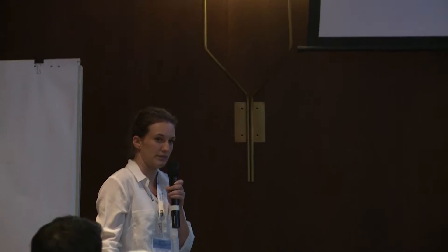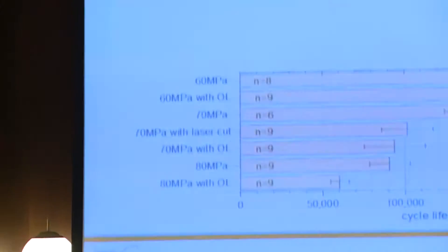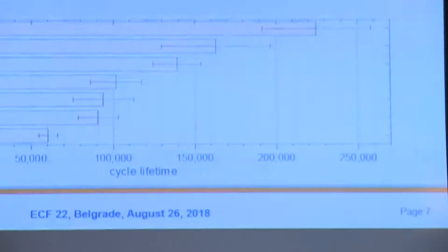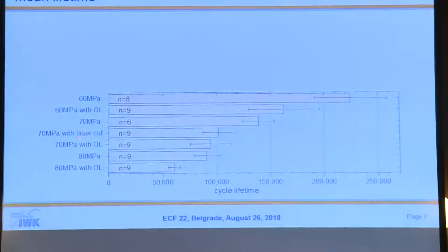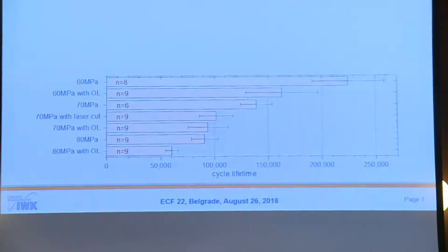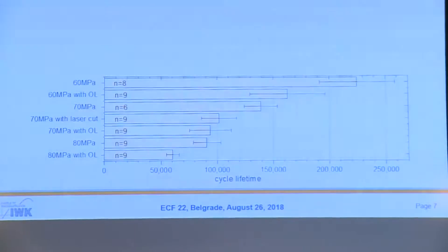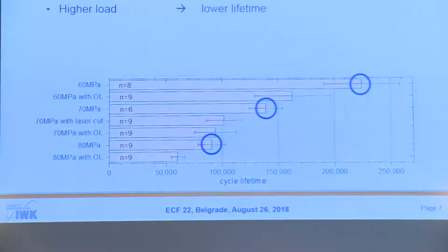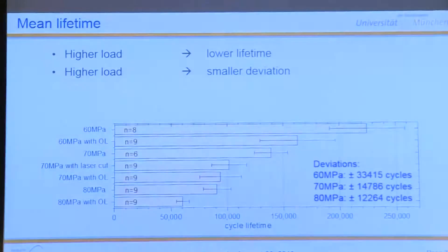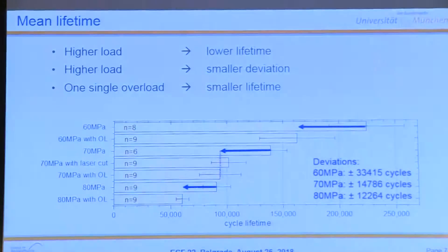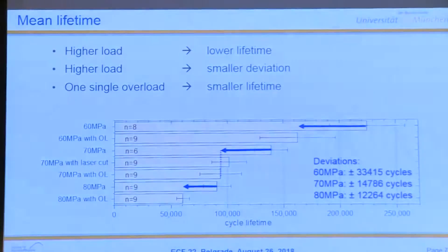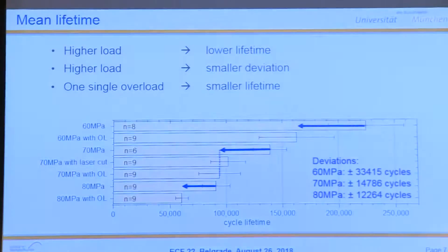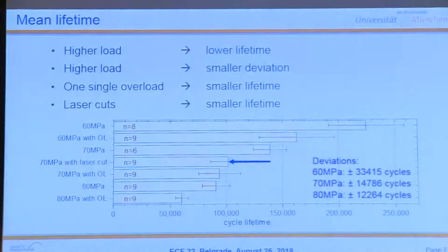We have different stress scenarios: 60, 70, and 80 megapascal, with and without overload, and for 70 megapascal also with a laser cut. If we have a high load, we have a lower lifetime. If we have a high load, we also have a smaller deviation. If we apply a single overload right at the beginning, it also significantly reduces the lifetime. And if we have a laser cut — a pre-damage at the notch root — it also shrinks the lifetime.